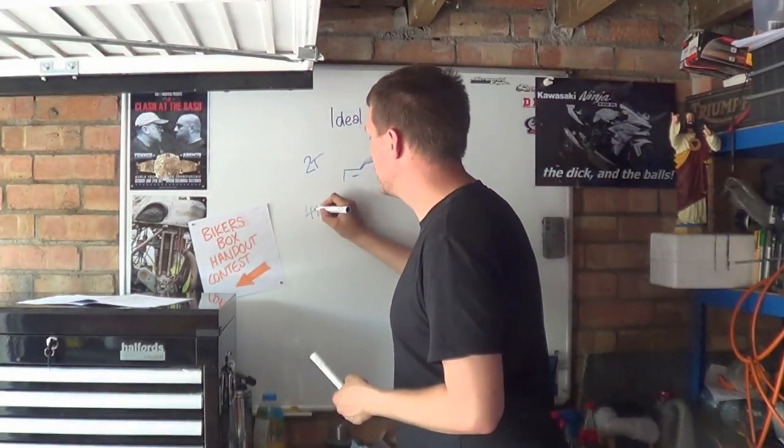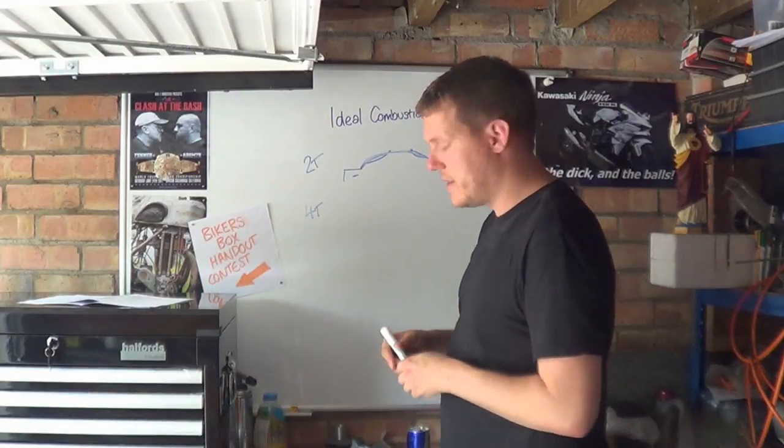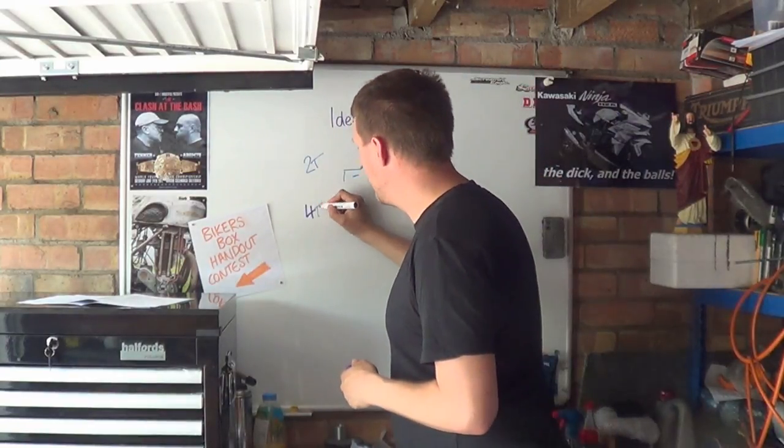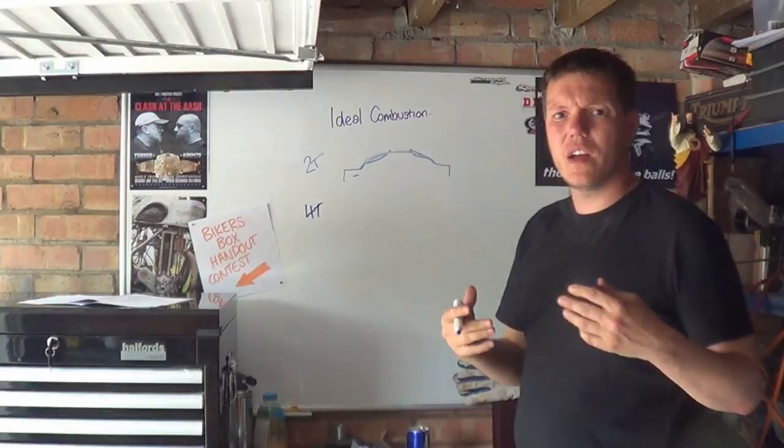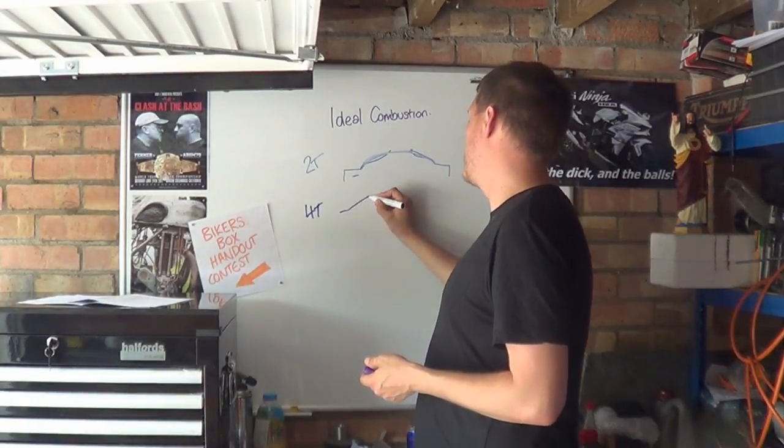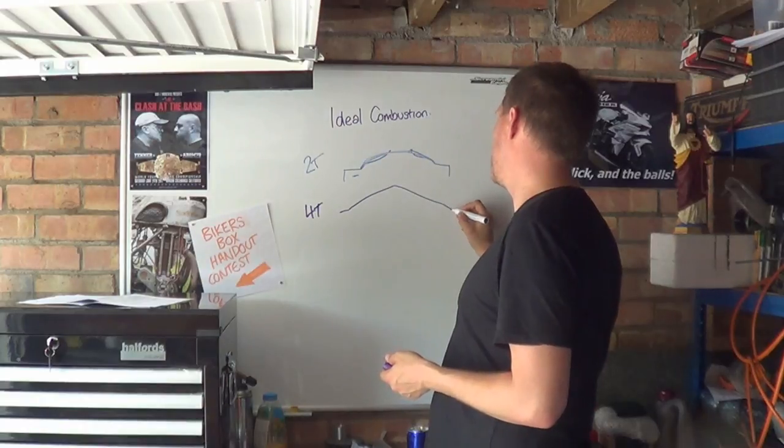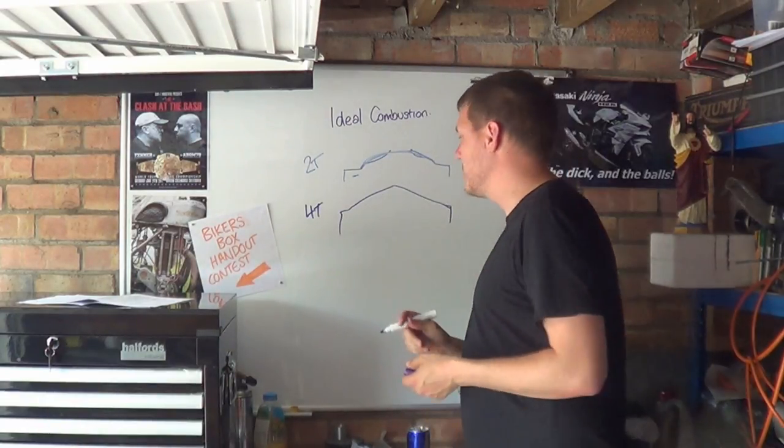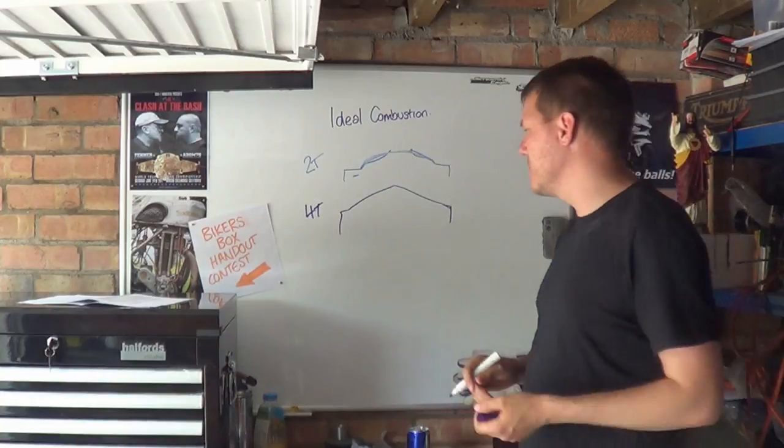For four-strokes we have what we call a pent roof. You have a bit of a squish band and then you have a pent roof, which is basically like that. That's your pent roof and that has your valves in.